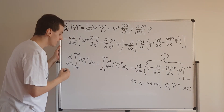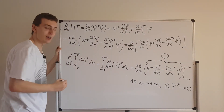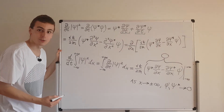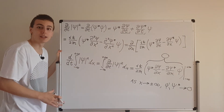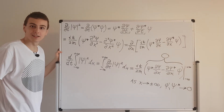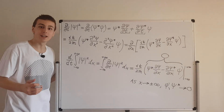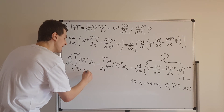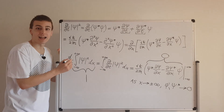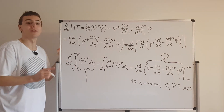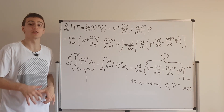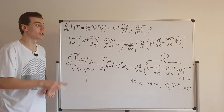So this expression has to equal zero. That means the time derivative of the area under the probability density curve is zero, so that area must be a constant. Since we set it equal to 1 at t equals 0, it has to equal 1 for all time. Normalization is preserved. You can watch the rest of the videos in this playlist if you click over here.